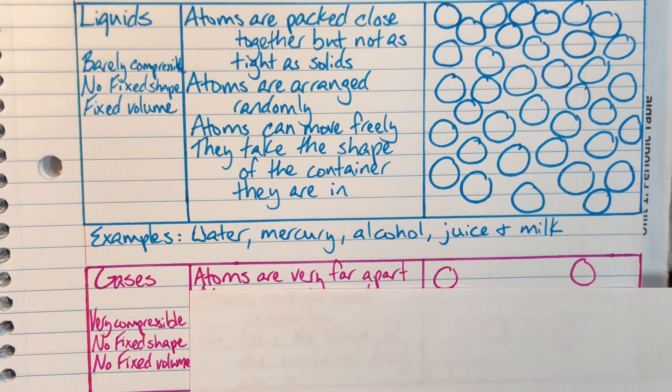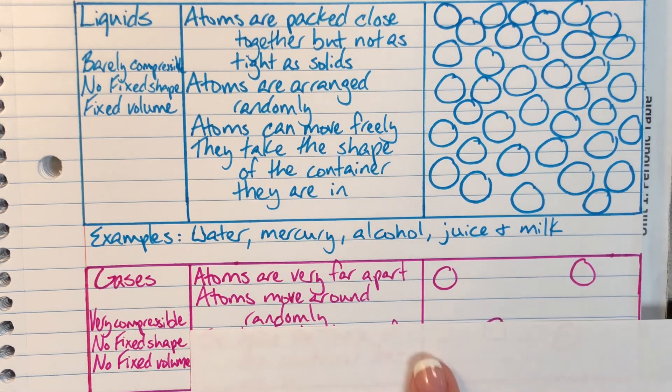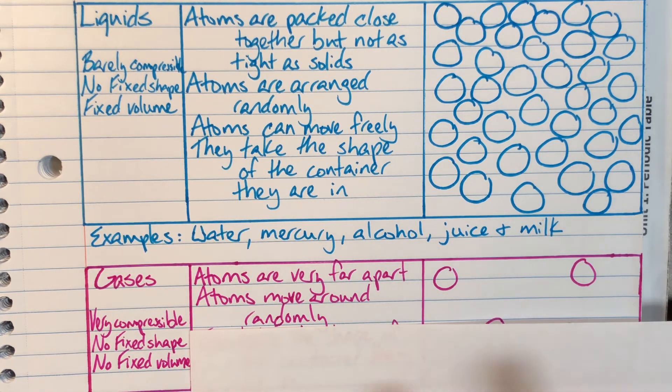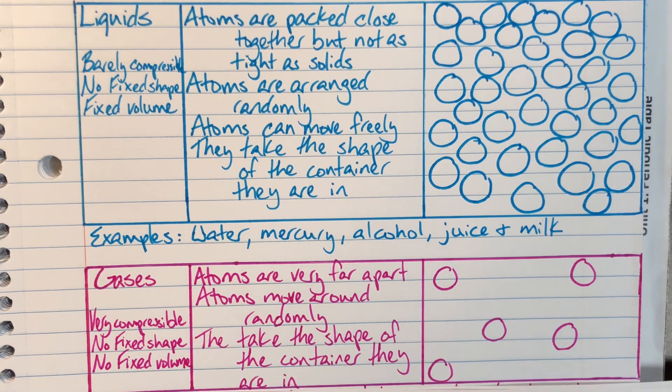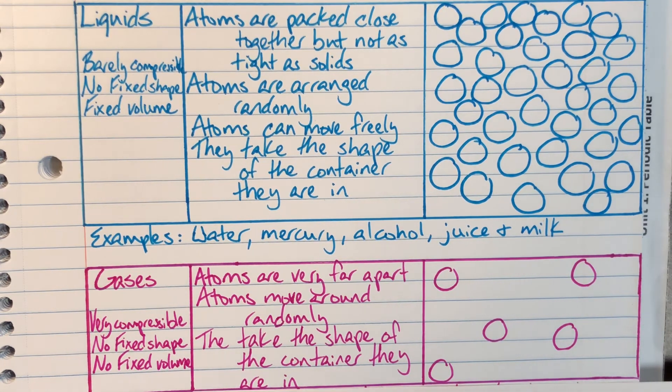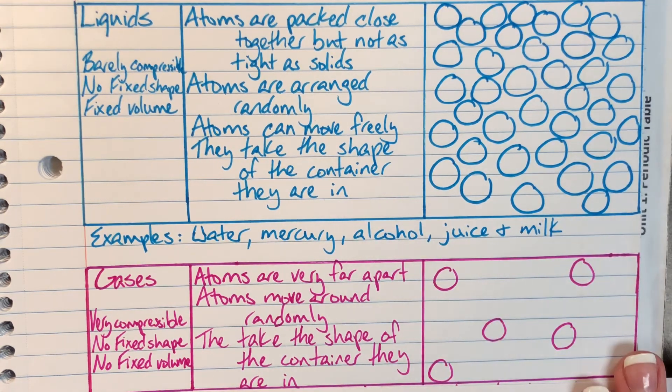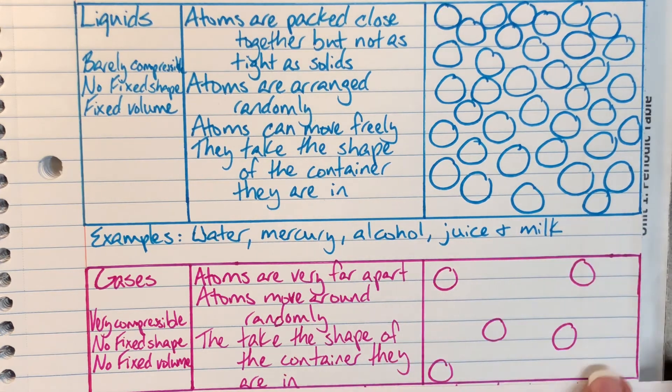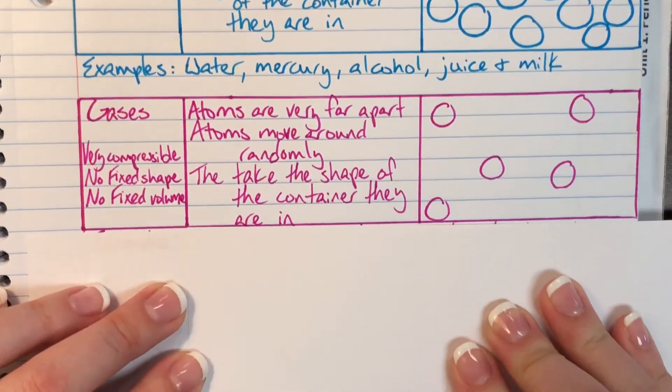My atoms are going to be very far apart for gases and they move around very randomly. You can see here in my molecular view my atoms for gases are very sparse. They're very far away from each other and they are going to take the shape of the container that they are in. Similar to liquids but they will also fill whatever container that they are in. Our circles are randomly placed, they have lots of space in between each other. They can get around wherever they would like to be, no problem at all.